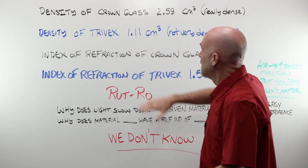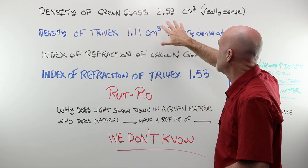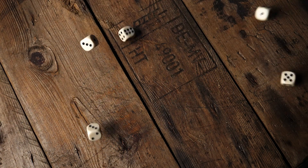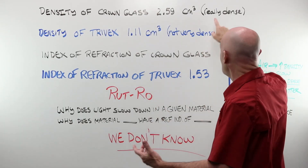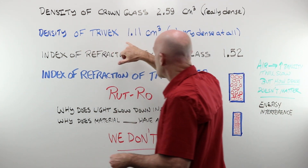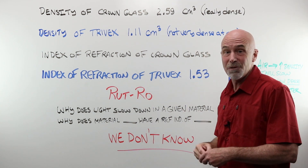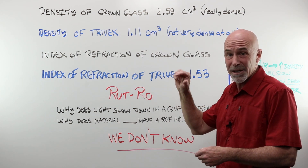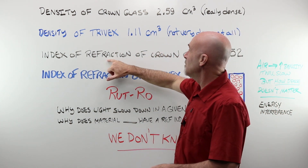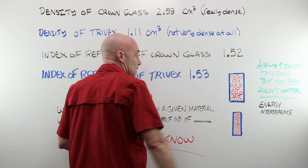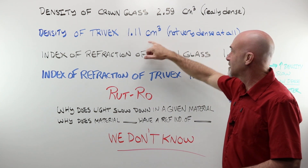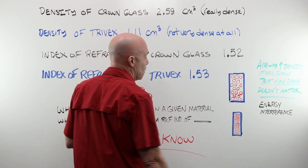Light will always slow down when it enters a medium of greater density than air, but how dense that material actually is doesn't have anything to do with it. The density of crown glass is 2.59 grams per cubic centimeter — roughly the size of a dice. If I have one cubic centimeter of crown glass, it weighs 2.59 grams. It's really, really dense. The density of Trivex, however, at 1.11 is not very dense at all — a dice made of Trivex, you could barely tell you had it in your hand. Just one little gram. Now the index of refraction — how much does light slow down in crown glass, that super dense stuff? 1.52. The index of refraction for Trivex, that super lightweight stuff? It slows light down to 1.53.